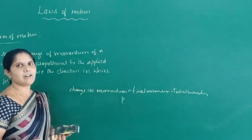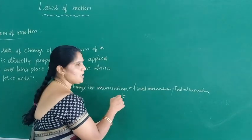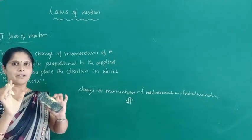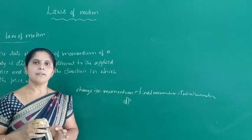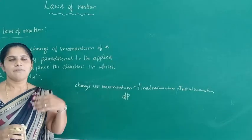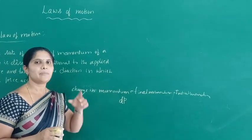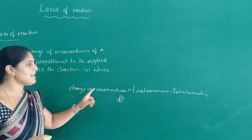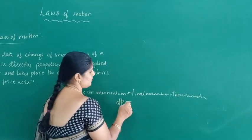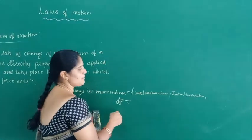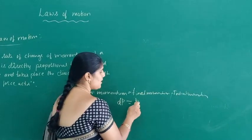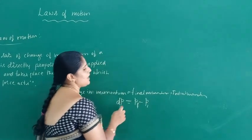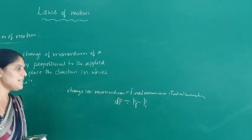Change in momentum is denoted by ΔP. For example, change in displacement is denoted by Δx, change in velocity is denoted by Δv — like that, change in momentum is written as ΔP. So ΔP equals final momentum minus initial momentum, that is Pf minus Pi, also written as P2 minus P1. Final momentum minus initial momentum equals change in momentum.